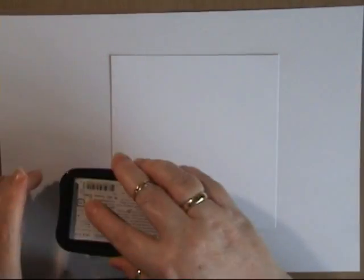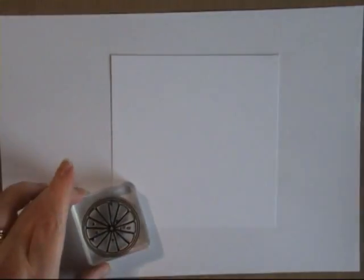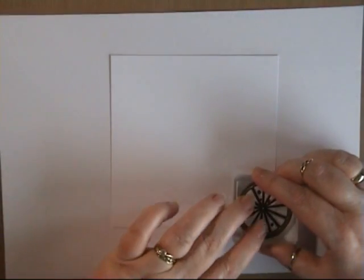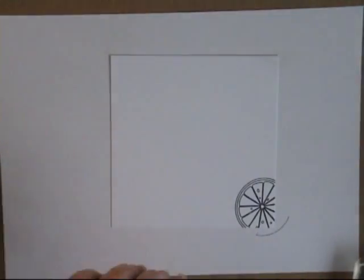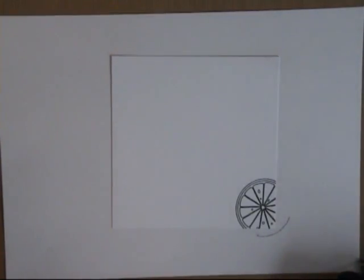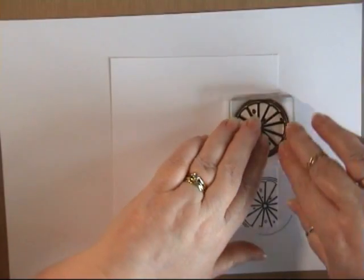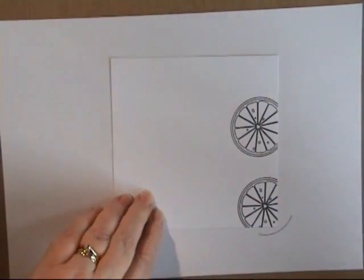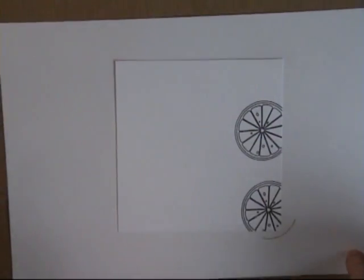So we need to ink up and we're going to randomly stamp around the edge of this white card, letting it fall over the edge. Try not to overlap the stamps because we're going to do a fill bit in between. So just as many as you want and wherever you want.